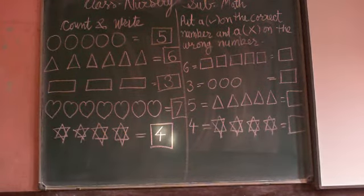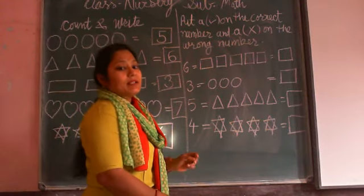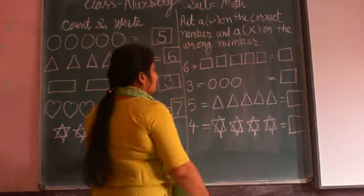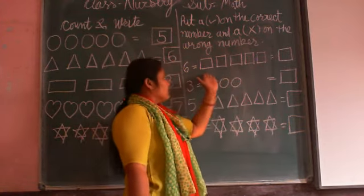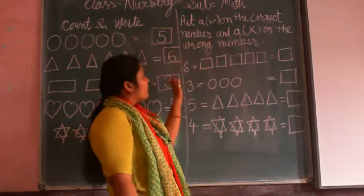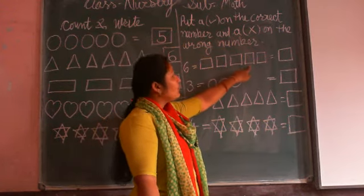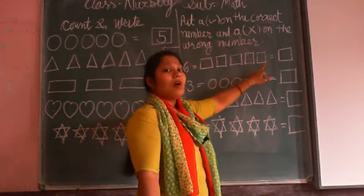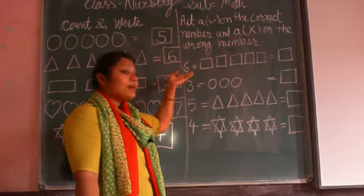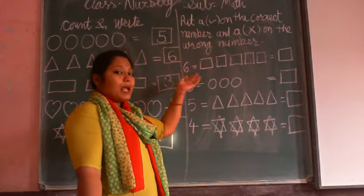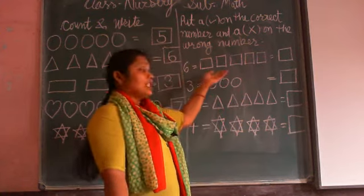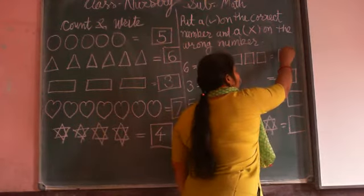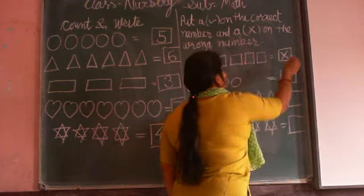Let's start. Which number is this? This is number 6. So first we count — here 5 squares. Count with me: one, two, three, four, five. We have 5 squares. And which number is this? Number 6. Square is 5, so this is wrong. We put a cross here.